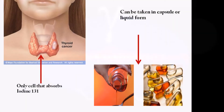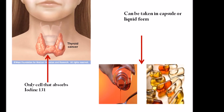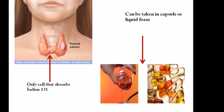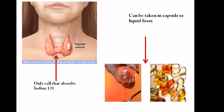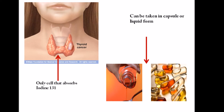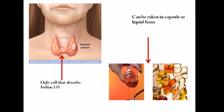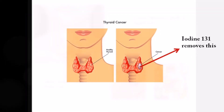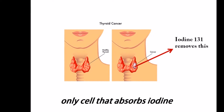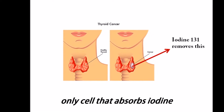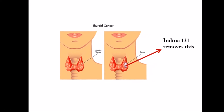Iodine-131 is associated with nuclear energy, medicinal diagnostic and treatment procedures. It is used to treat thyroid cancer and other thyroid diseases. It is consumed in a liquid or capsule form. The thyroid is the only cells in your body that absorb iodine, so no other tissue will be damaged by the radioisotope.